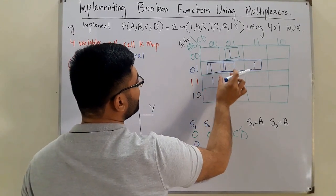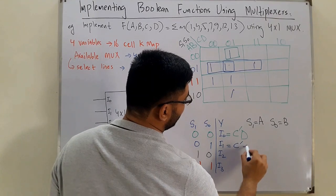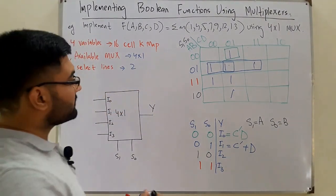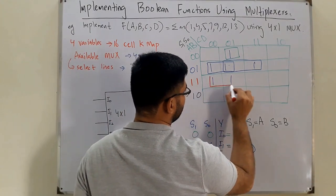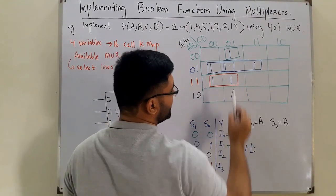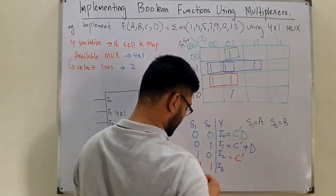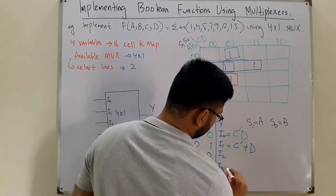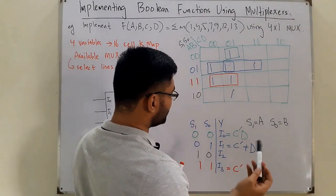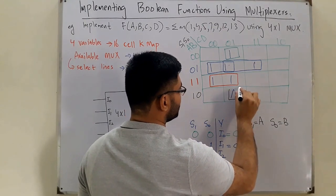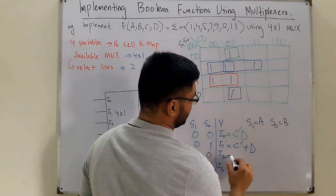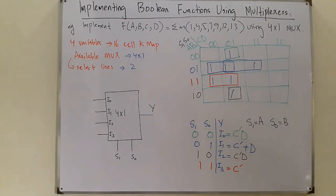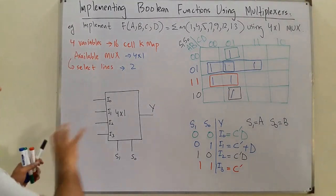In the first group C' is not changing, and in the second group D is not changing, so I1 = C' + D. For the red row (A=1, B=1), C' is not changing again, giving I3 = C'. For the black row (A=1, B=0), the single one represents C'D, so I2 = C'D.